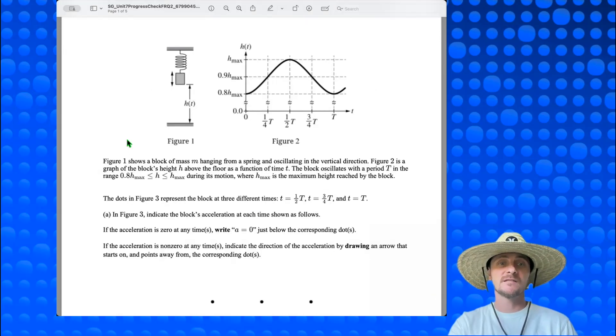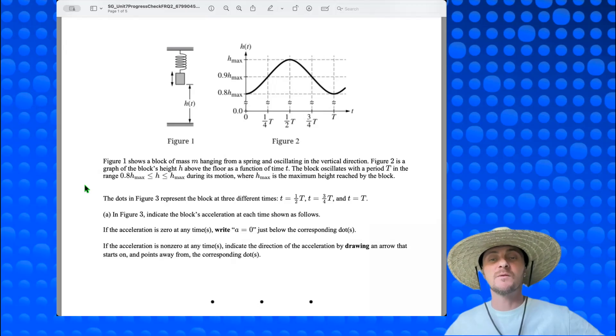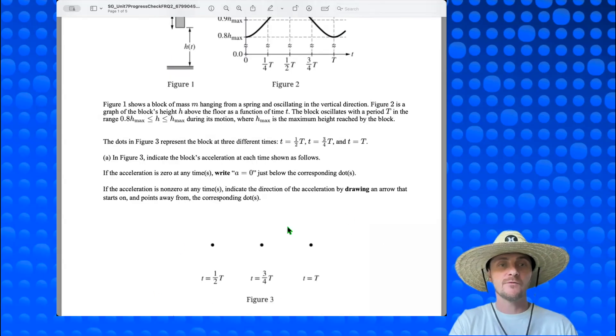So we have an oscillating system. Let's read what they want us to know. Figure 1 shows a block of mass m hanging from a spring and oscillating in the vertical direction. Figure 2 is a graph of the block's height h above the floor as a function of time t. The block oscillates with a period capital T in the range 0.8 h max is less than or equal to h is less than or equal to h max during its motion, where h max is the maximum height reached by the block. The dots in Figure 3 represent the block at three different times: t equals half the period, t equals three-fourths the period, and t equals the full period.